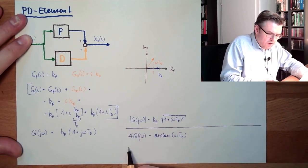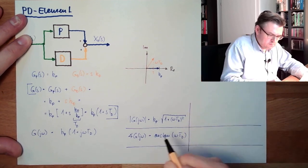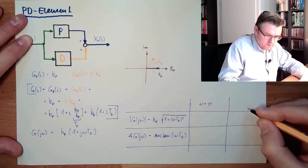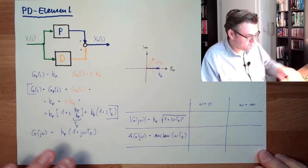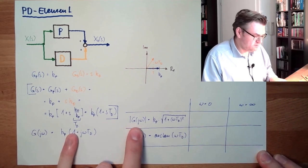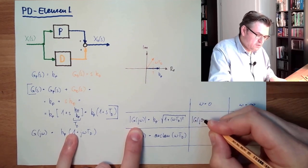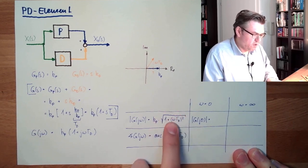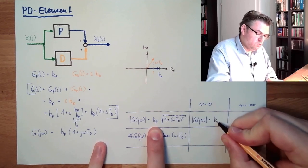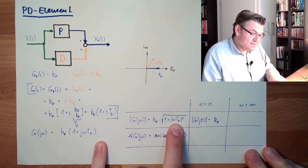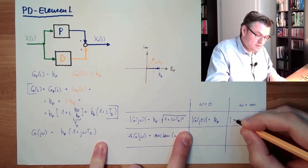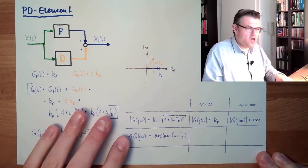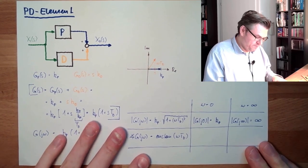How do these look at the extremes — at omega equals zero and at omega equals infinity? For the absolute value at omega = 0: omega is zero, so the term under the square root is 1, giving us kp. At omega equals infinity, this becomes something multiplied by infinity, so the absolute value goes to infinity.